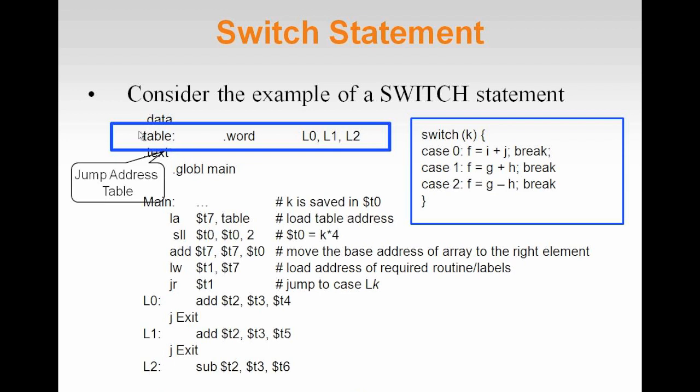The jump address table, which is highlighted here, contains the addresses of these locations. The load address loads the base address of the table. The case index k is multiplied by 4 to calculate the right offset from the base address of the table. The offset is added to the base address to point to the right address in the table.